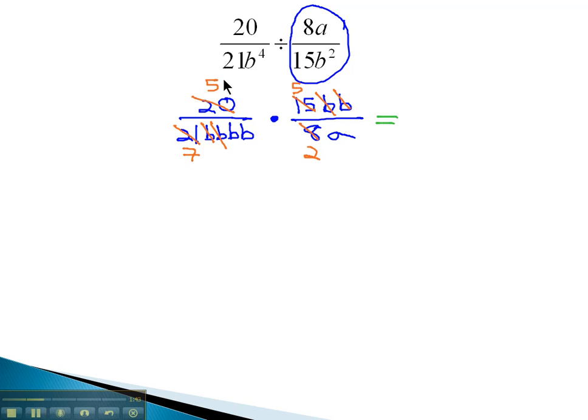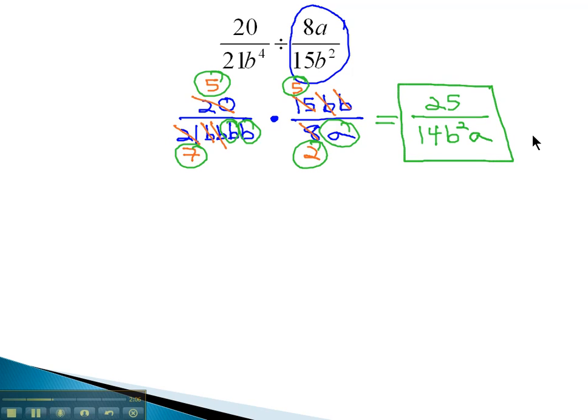And taking a look at what we have left in the numerator, 5 times 5 is 25. In the denominator, 7 times b times b times b times 2 times a. 7 times 2 is 14. b times b we'll write as b squared and an a. We end up with our final solution of 25 over 14b squared a.